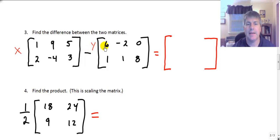So 1 minus 6, negative 5. And I'll put that in row 1 column 1. 9 minus a minus 2. So 9 plus 2 is 11. And 5 minus 0 is 5.